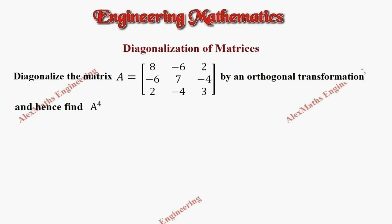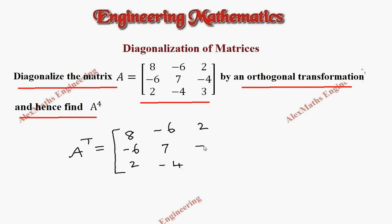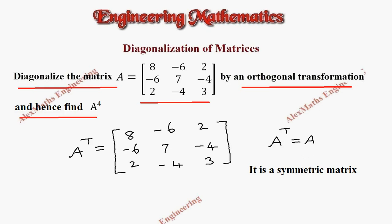Hi students, this is Alex. In this video we are going to diagonalize the given matrix A by an orthogonal transformation, and hence find A to the power 4. This matrix A is a symmetric matrix. When I find A transpose by writing the rows as columns, I get A transpose equal to A, therefore this given matrix A is symmetric. Orthogonal transformation is possible only when the given matrix is symmetric.